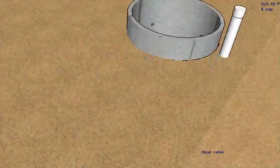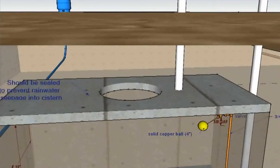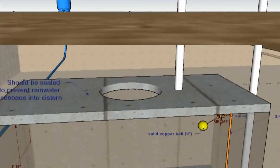The concrete ring should also be sealed to the top of the cistern block. If it is not sealed properly, rainwater may sink down through the gravel and soil between the ring and the block and into your cistern.